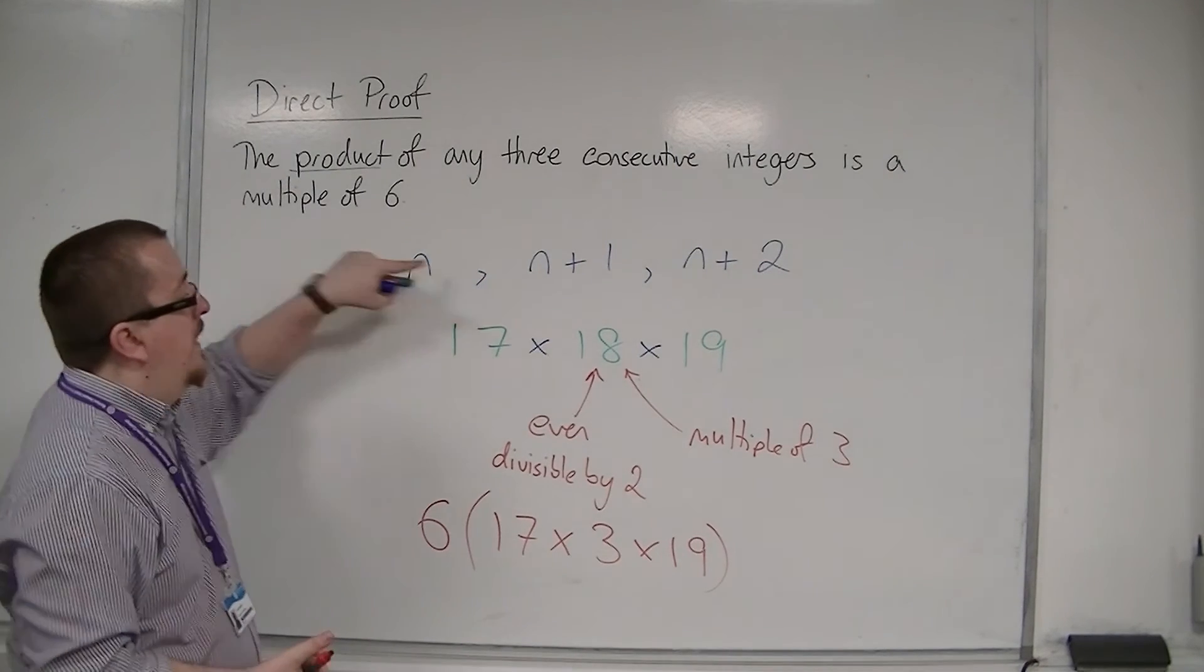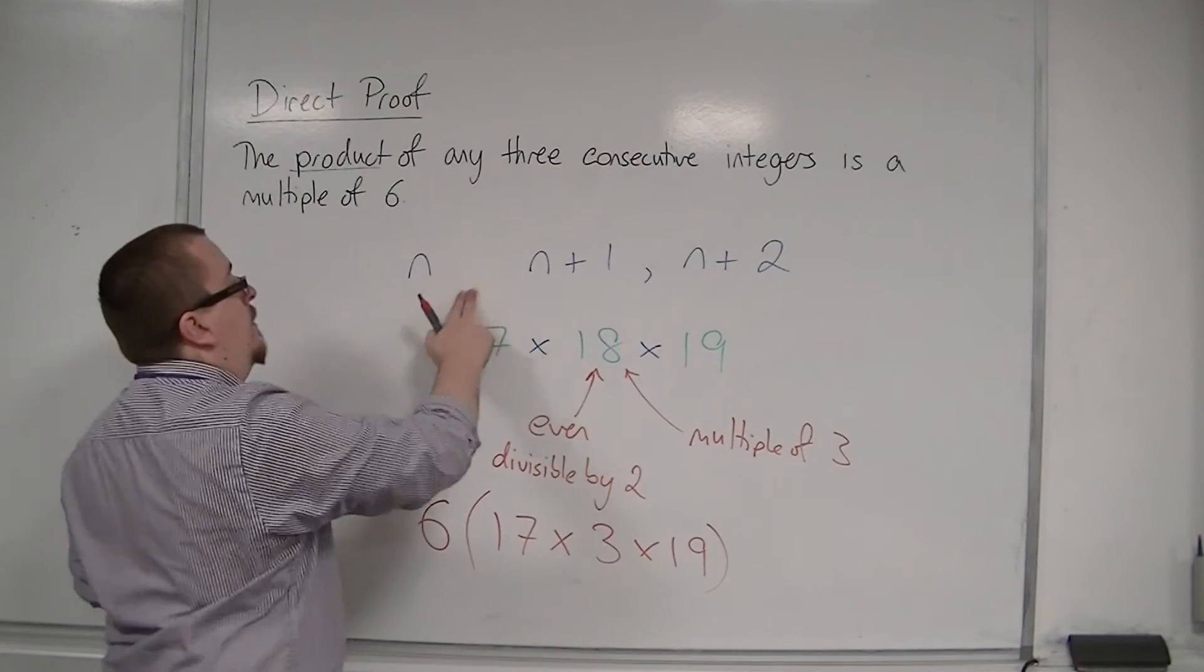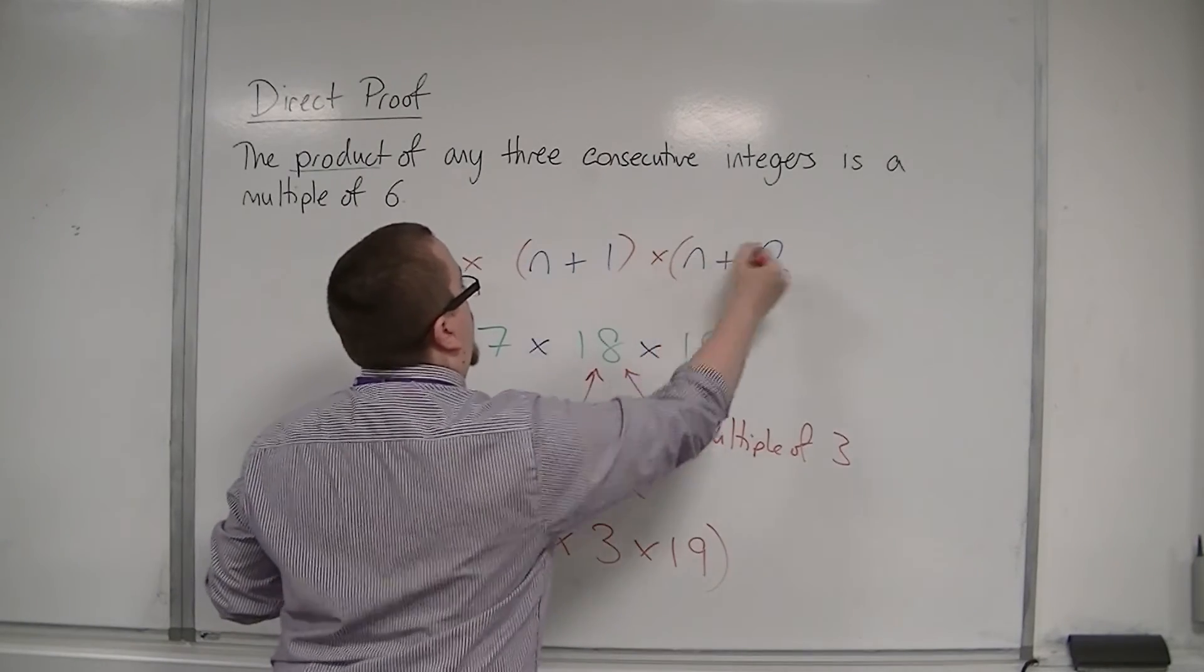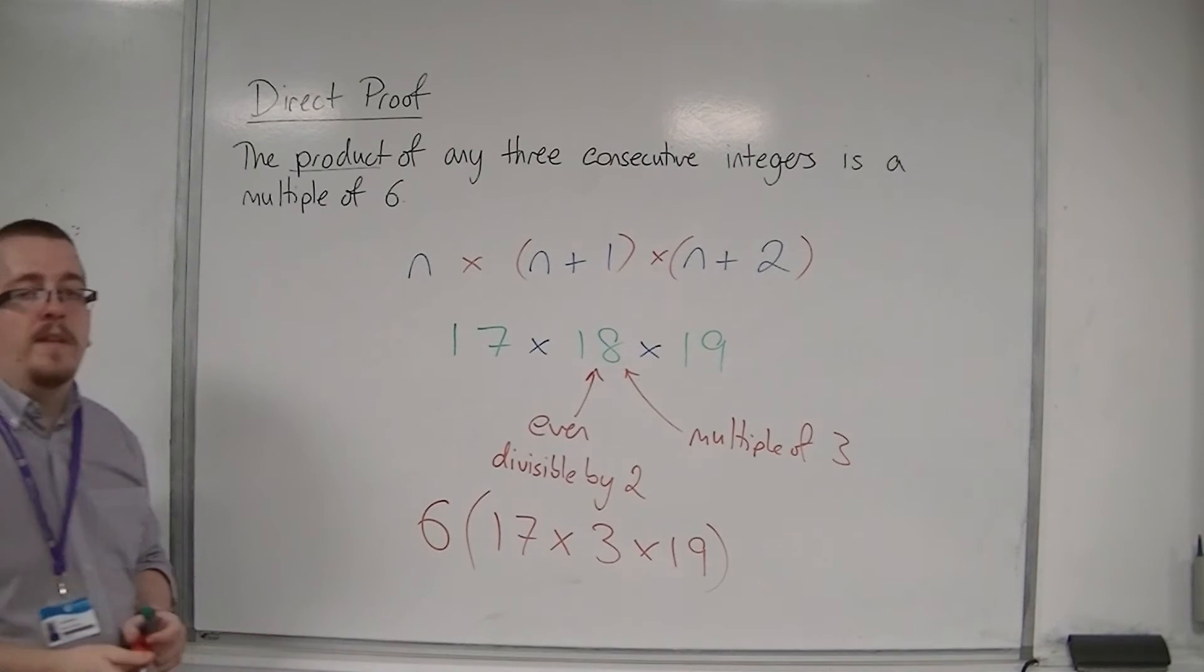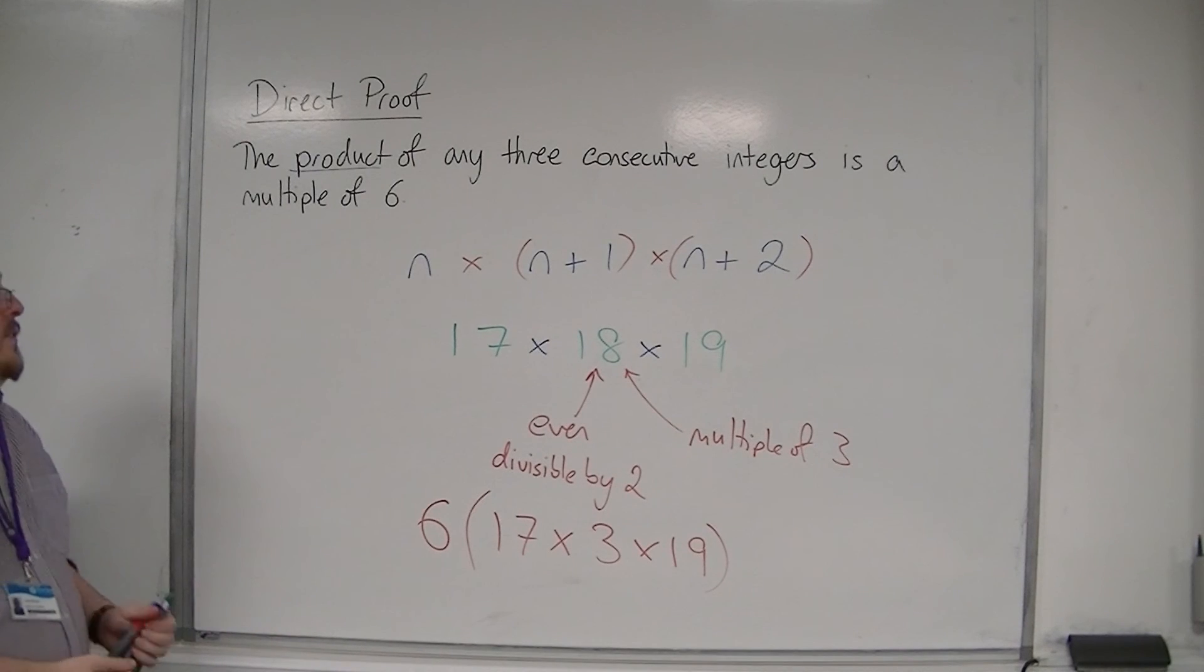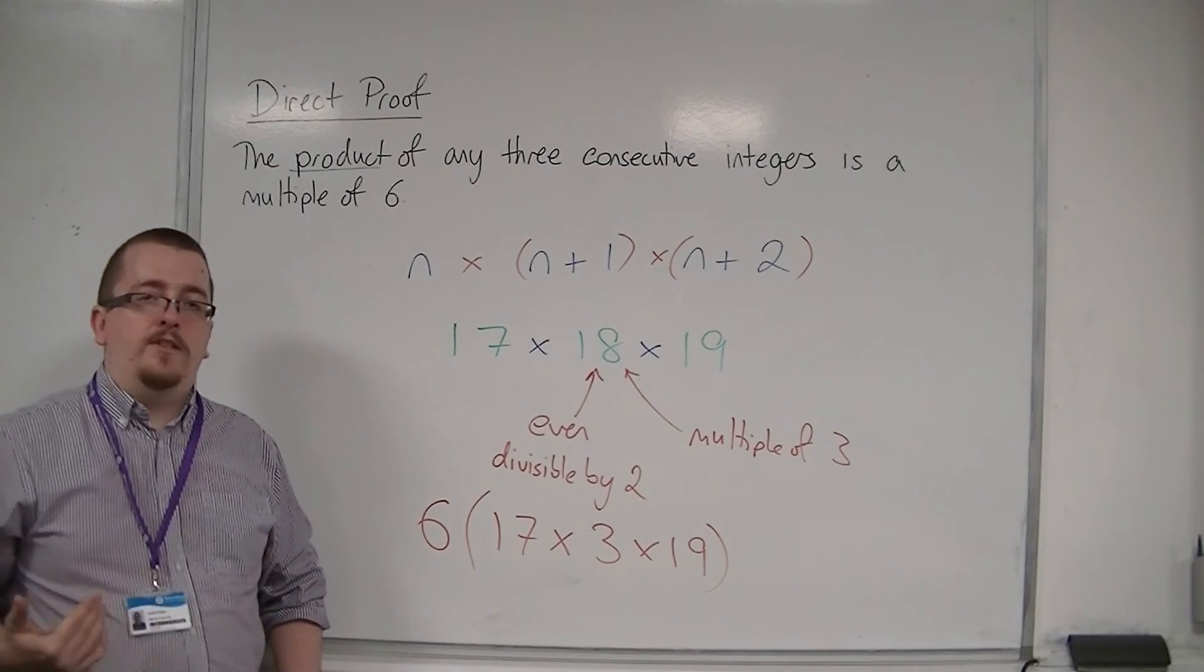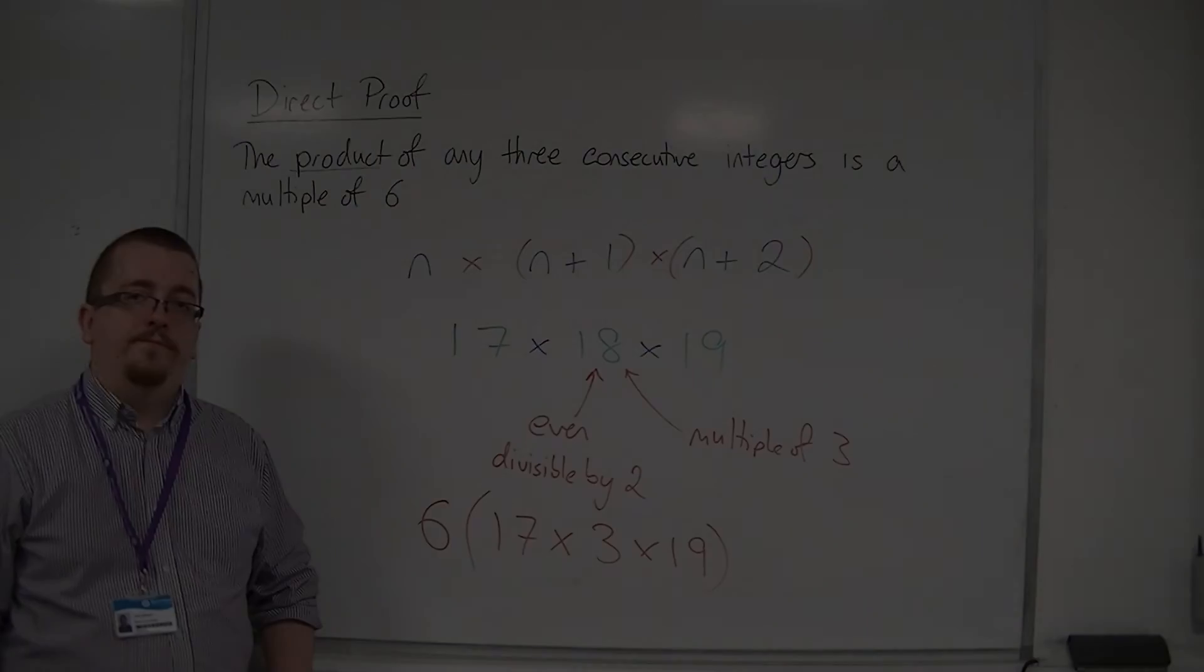And, in general, that must be true in all cases, because of our logical argument here. So, if you have one that's divisible by two, and one's divisible by three, then you can take a factor of six out.